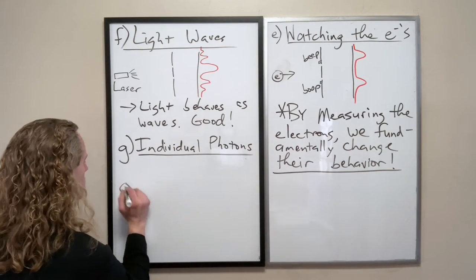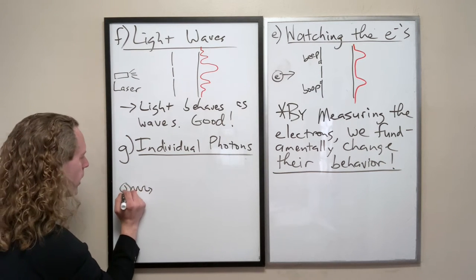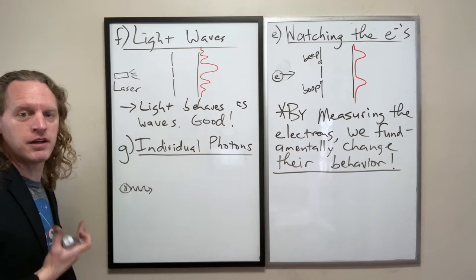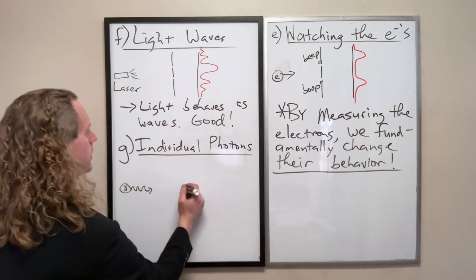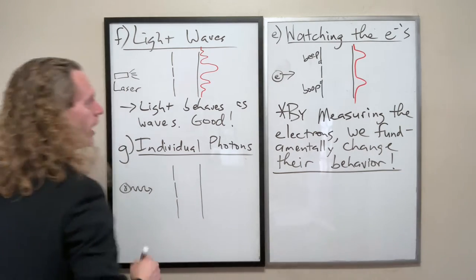So I'll write it like this, where we have an individual photon. And photons, we typically use the letter gamma to notate them. So we're going to pass an individual photon through that double slit screen. We're going to measure the output.